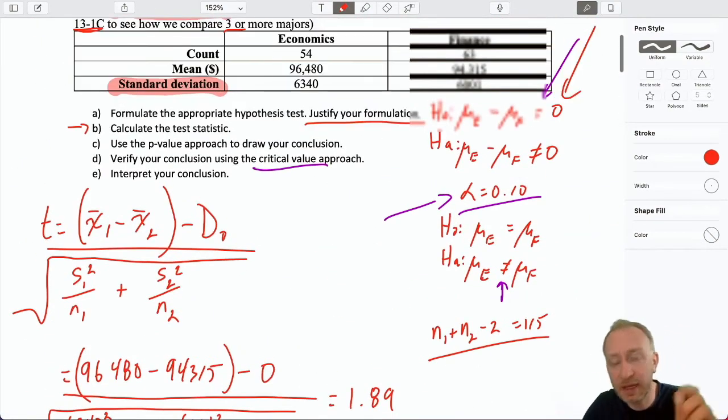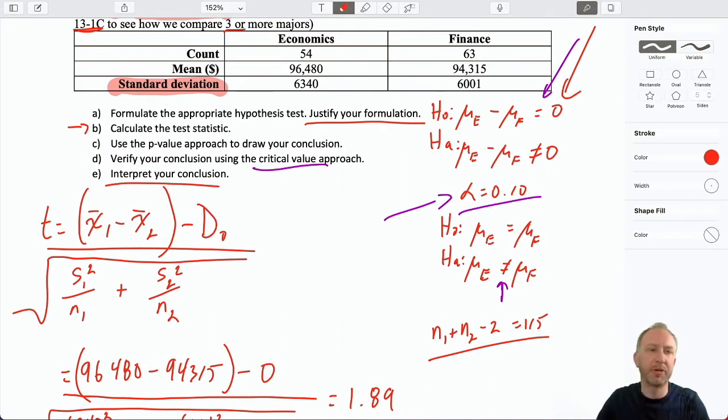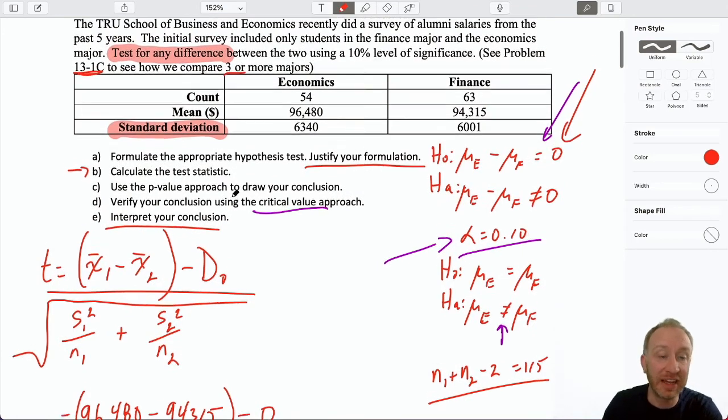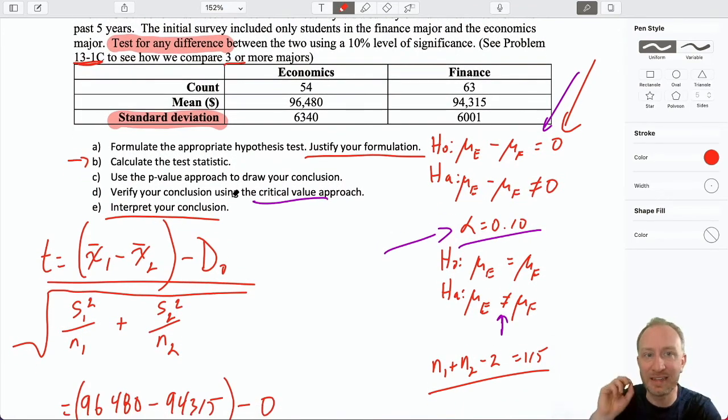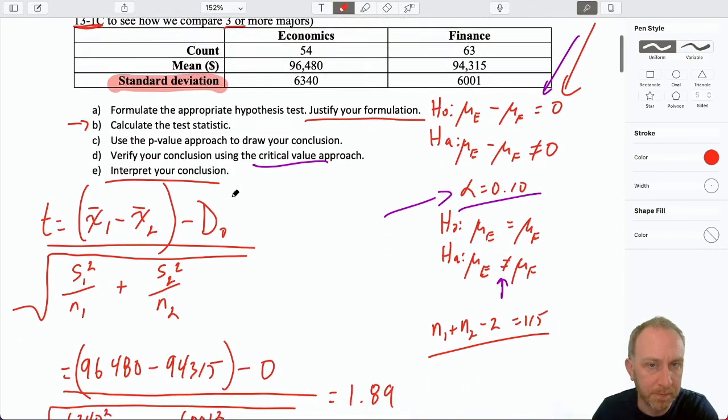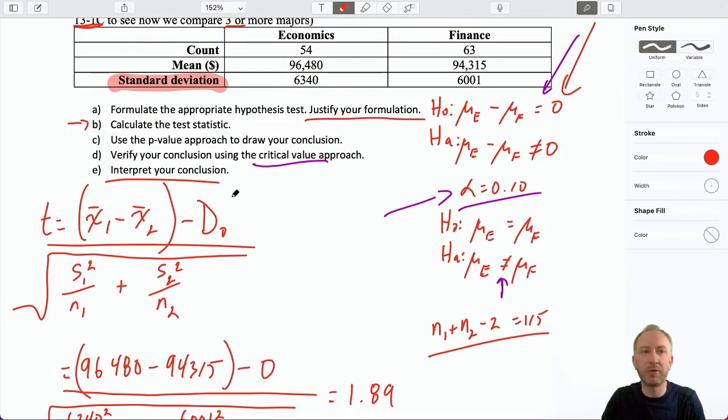So coming back here, finally, let's interpret our conclusion. So both of these approaches we rejected. Again, we must always get the same conclusion, regardless of which approach we use. Reject the null hypothesis. So here I have evidence to show that the difference in average salary between an economics major and a finance major is statistically significant.